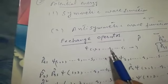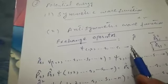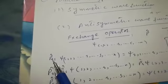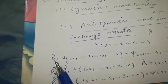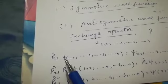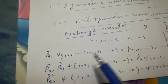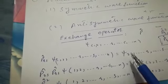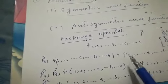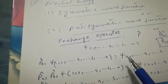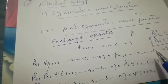If we consider the wave function psi(1, 2, ..., r, s, n) and apply the exchange operator P of r,s — where r and s vary — then applying P on this wave function will interchange the positions of particles one and two. So the wave function becomes psi(2, 1, ..., r, s, n).